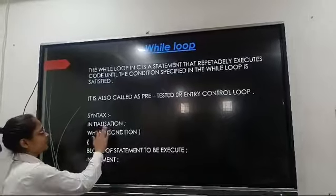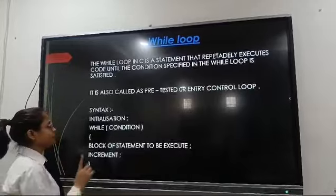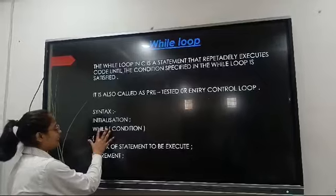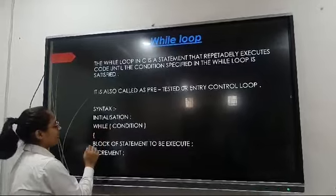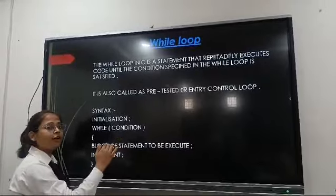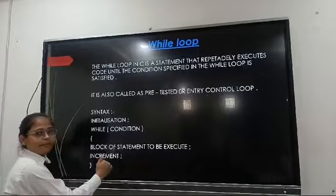First is initialization - we have one counter variable which we initialize first. Then we write the condition in the while statement, then curly braces. Inside this, we write the block of statements which we want to execute multiple times. After that, we do the increment.